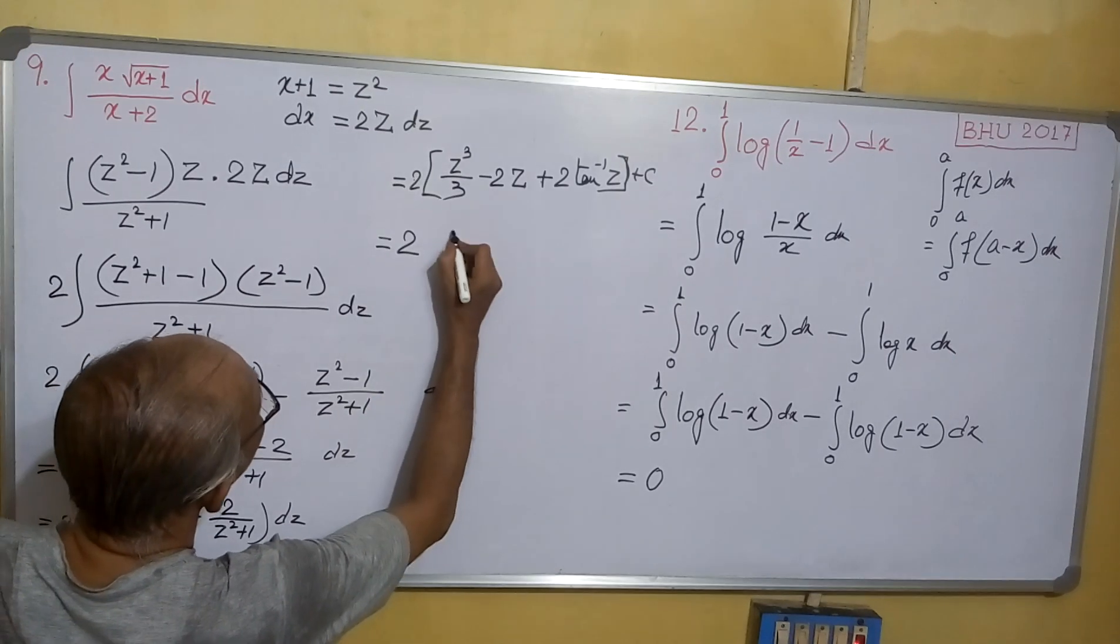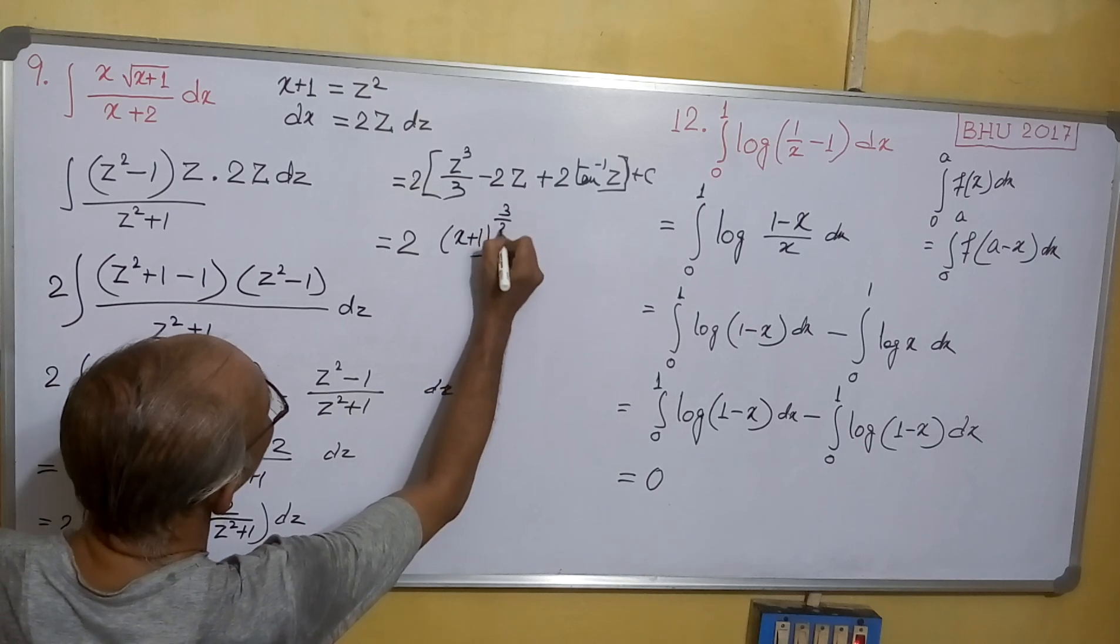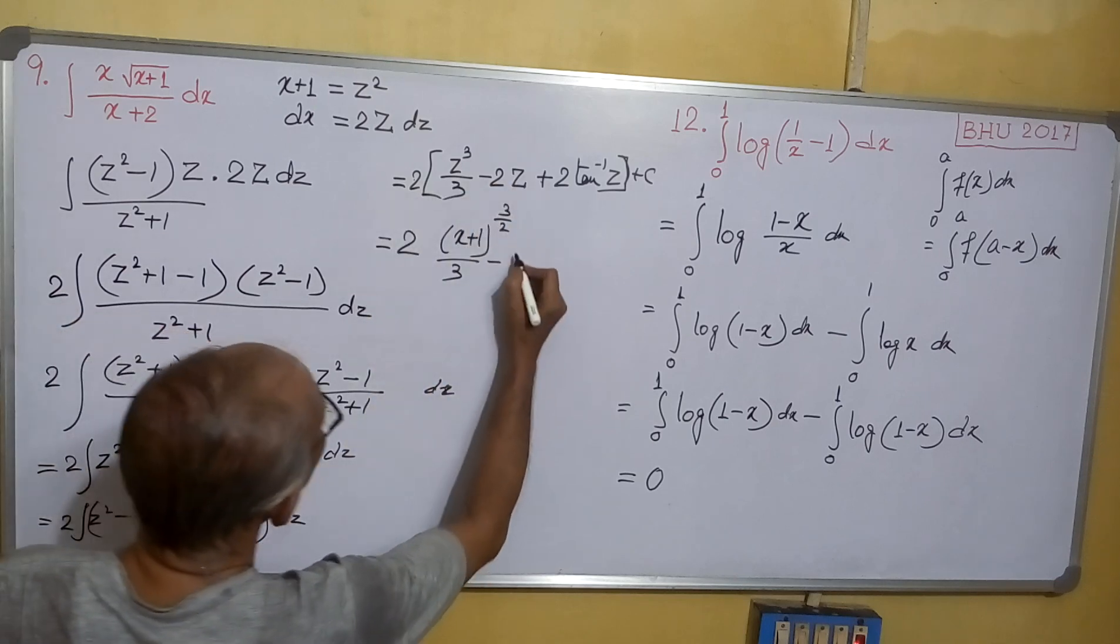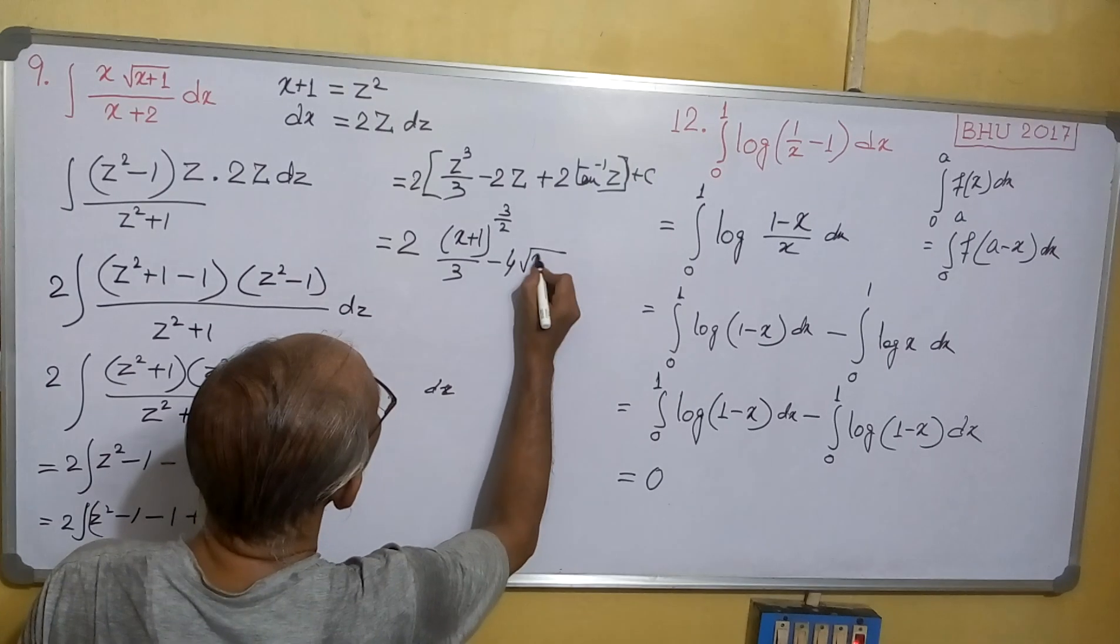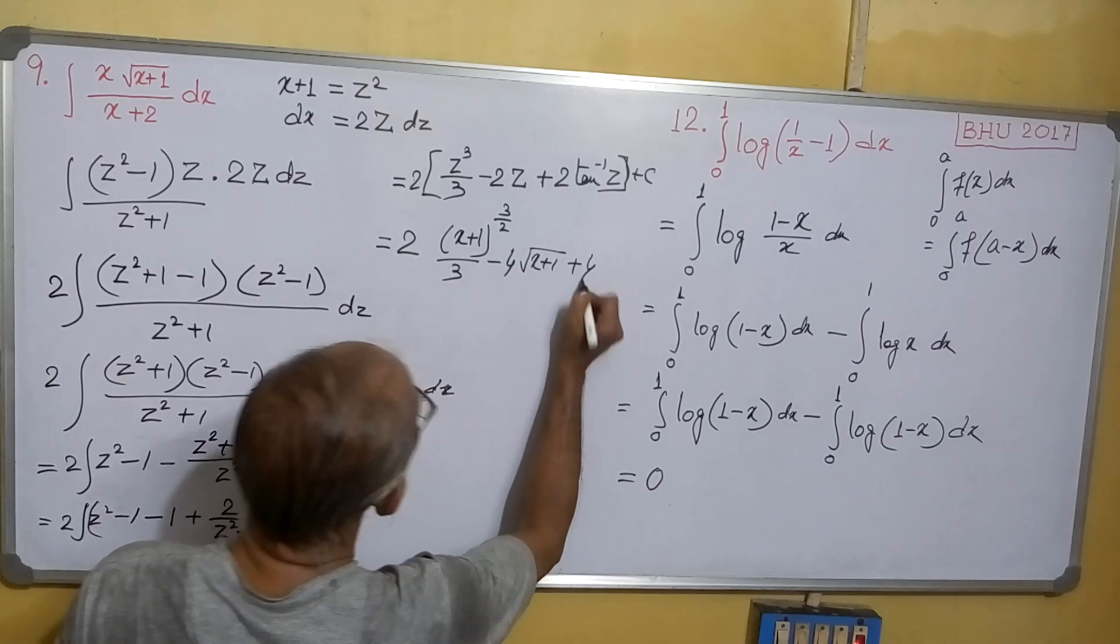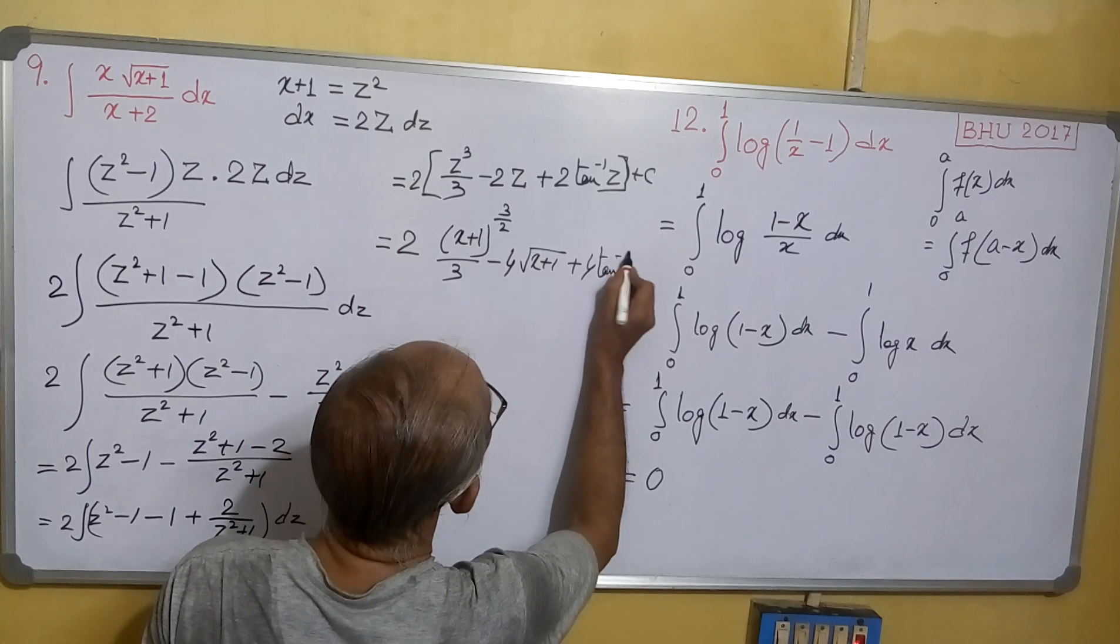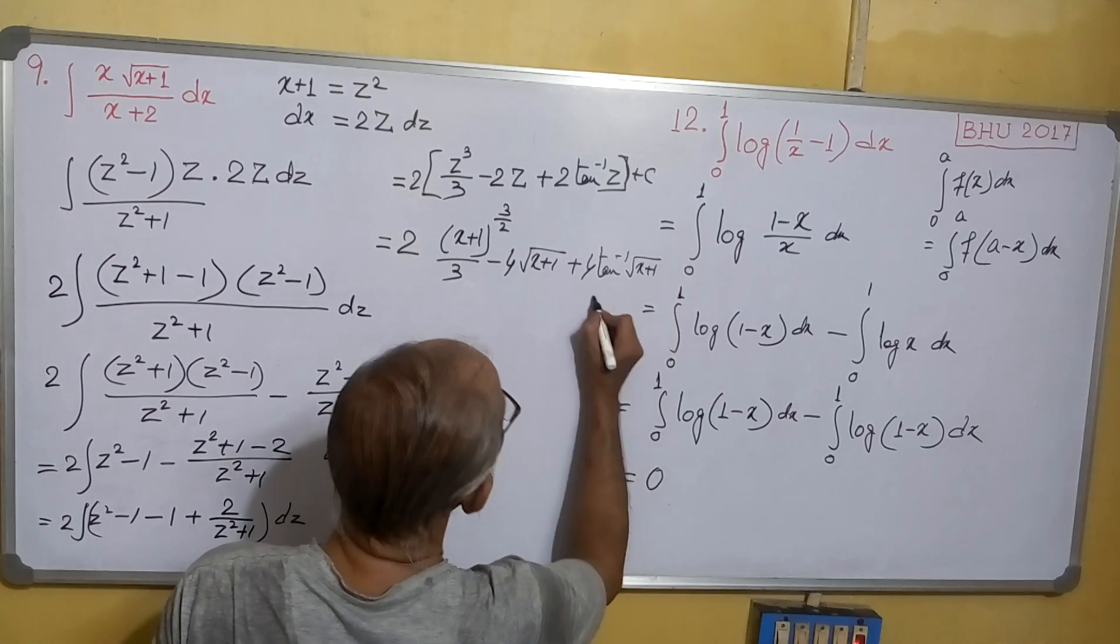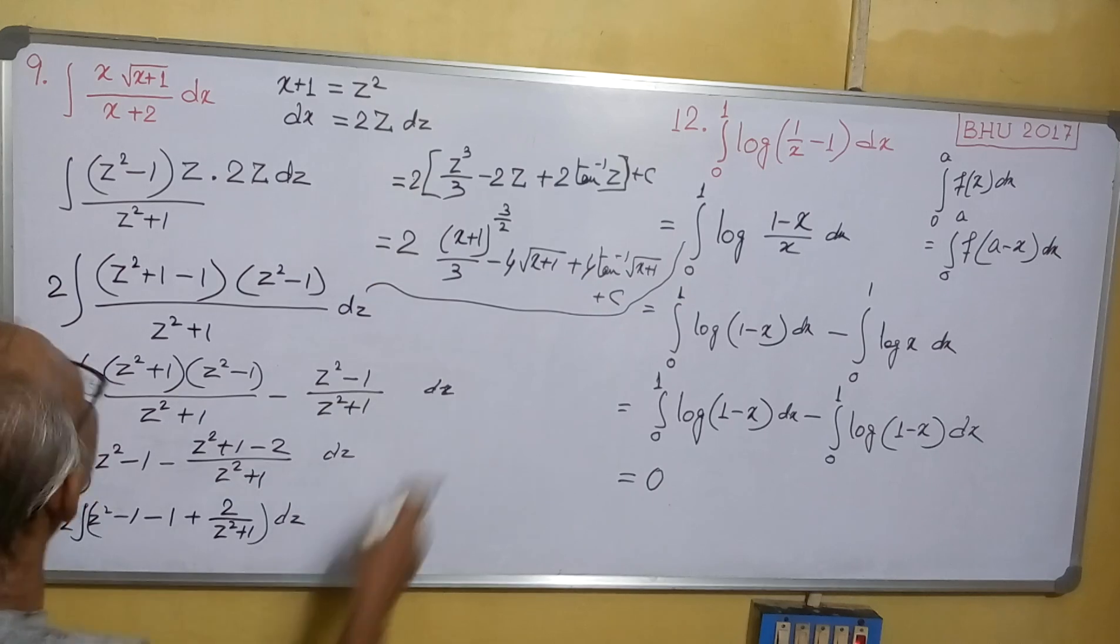So (x+1) to the power 3/2 divided by 3, minus 2 times 2 is 4, times root of (x+1), plus 2 times 2 is 4, times tan inverse of root of (x+1), plus C. Hence this will be our final answer.